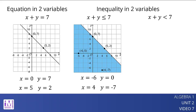In contrast, pairs like x equals 0 and y equals 7 and x equals 5 and y equals 2 are not solutions. On a coordinate plane, the solution does not include the points on the line that represent x plus y equals 7.